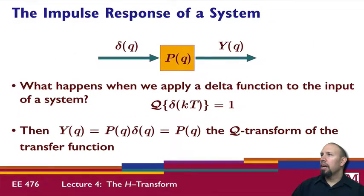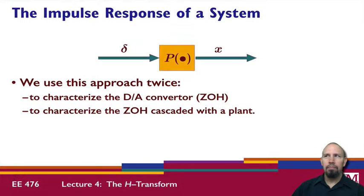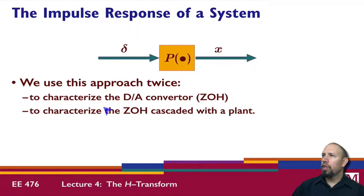Similarly, if we're working in the Q domain, we also have the property that the Q transform of a delta function is also one. So when we apply a delta function to a system, the output is just the Q transform of the transfer function. We're going to use this approach twice: once to characterize the digital-to-analog converter, and next to characterize the zero order hold cascaded with a plant.